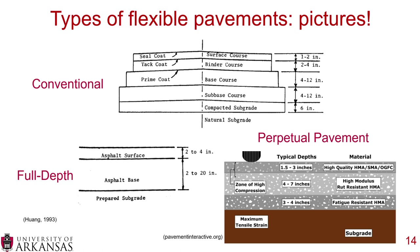For perpetual pavements, the top layer is high-quality HMA, SMA, or OGFC (stone matrix asphalt or open-graded friction course) — 1.5 to 3 inches thick. Below that is high-modulus, rut-resistant HMA at 4 to 7 inches in the zone of high compression. At the bottom, 3 to 4 inches of fatigue-resistant HMA handles maximum tensile strains. Each layer is strategically designed to control its primary distress mode.